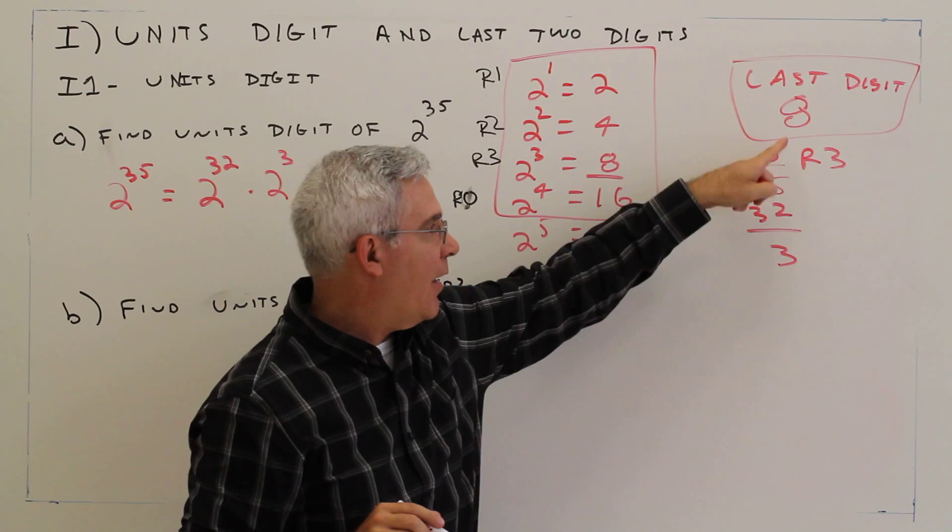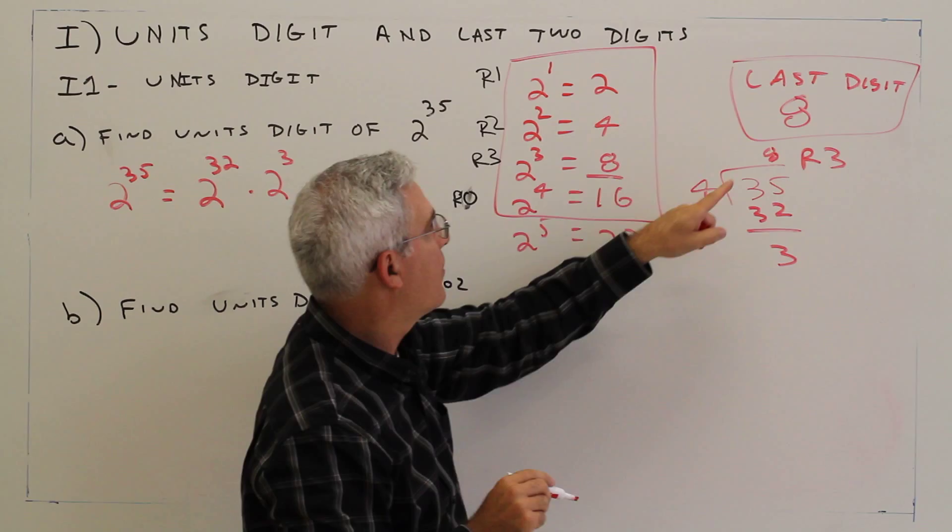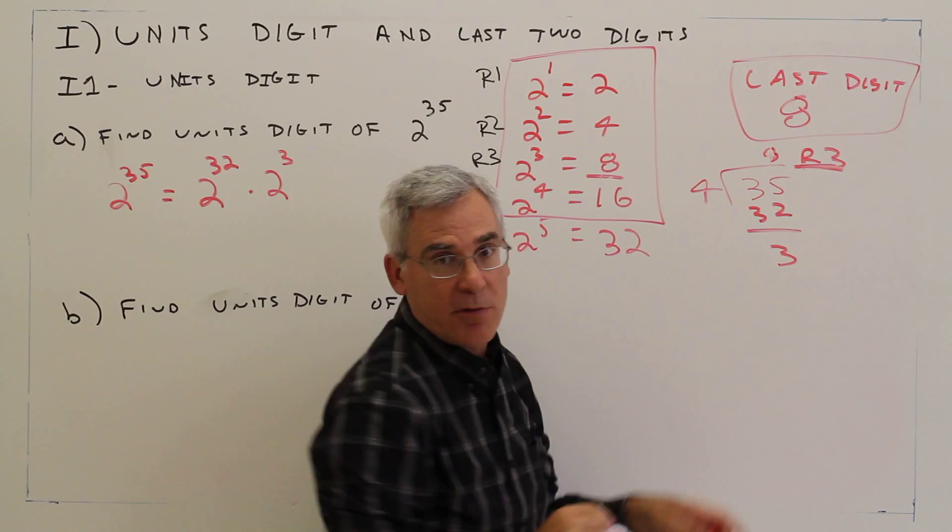Just a coincidence that that 8 is the same as that. So remainder 3 going to remainder 3 and getting an 8. Again, it's this remainder 3 and this remainder 3 there that's giving you the answer.